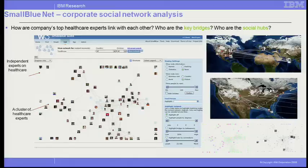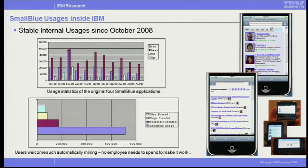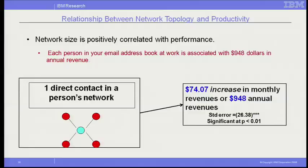You can also see the network analysis from a global view — for example, finding healthcare experts inside IBM, who they are, how they are connected, who are independent experts, who are the bridges, who are the leads, and where they are in the world. This tool has been in production use inside IBM for about a year. The adoption has been quite impressive because people don't need to spend a lot of time — they are able to use this tool to help solve their problems.